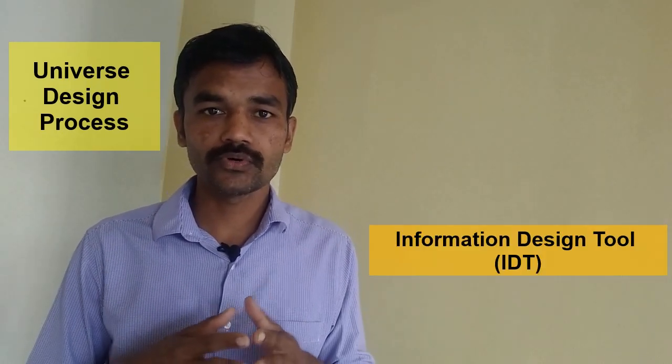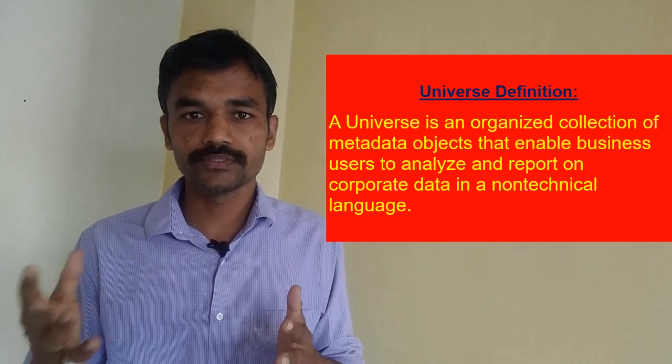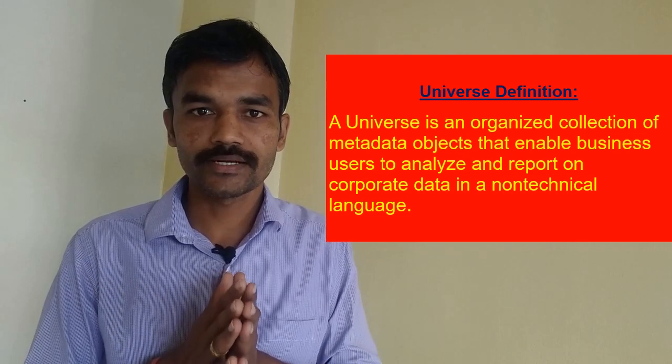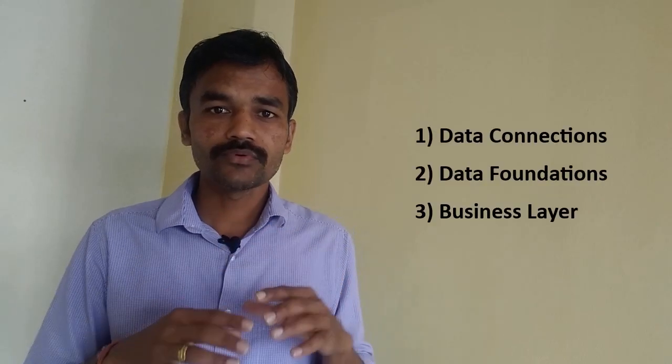Now let's come to the universe design part. You should be able to tell what the different steps are to create a universe and what a universe is. I am focusing on the Information Design Tool since that is the tool used in the latest version of Business Objects. The universe is a semantic layer between the technical tables and the business layer, and it is required to have business terms created. The three steps in the Information Design Tool are: data connections, data foundation, and business layer.